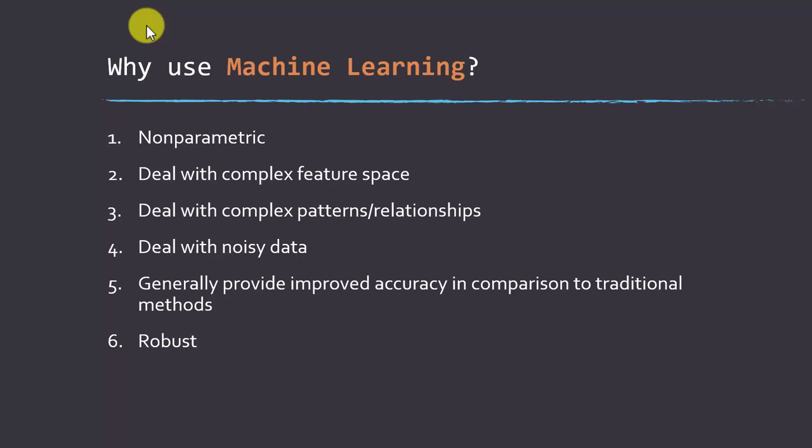They can deal with complex patterns and relationships between variables that may not be easily handled in a standard regression or parametric environment. They tend to be better at dealing with noisy and complex data than common parametric methods. Looking across my own work and the research, machine learning methods are generally providing higher accuracies than traditional parametric methods. These methods are really robust for dealing with the complex datasets we encounter in the geospatial sciences.